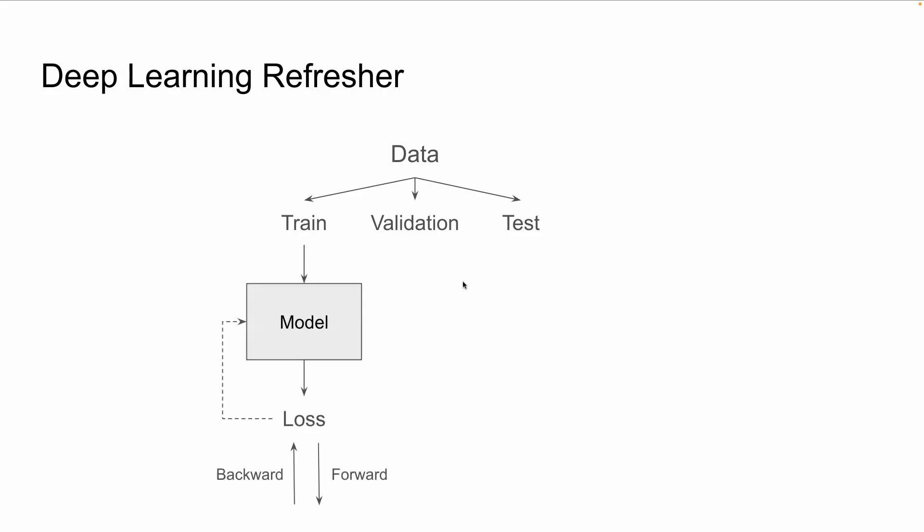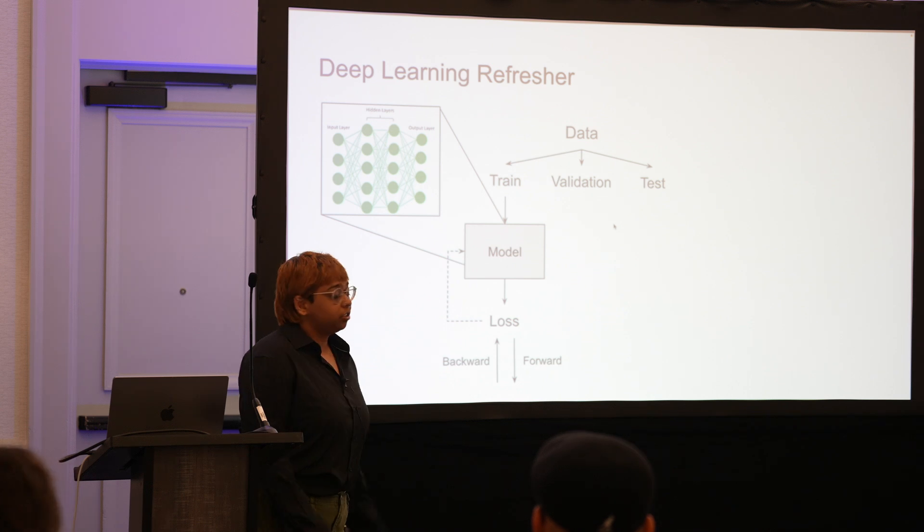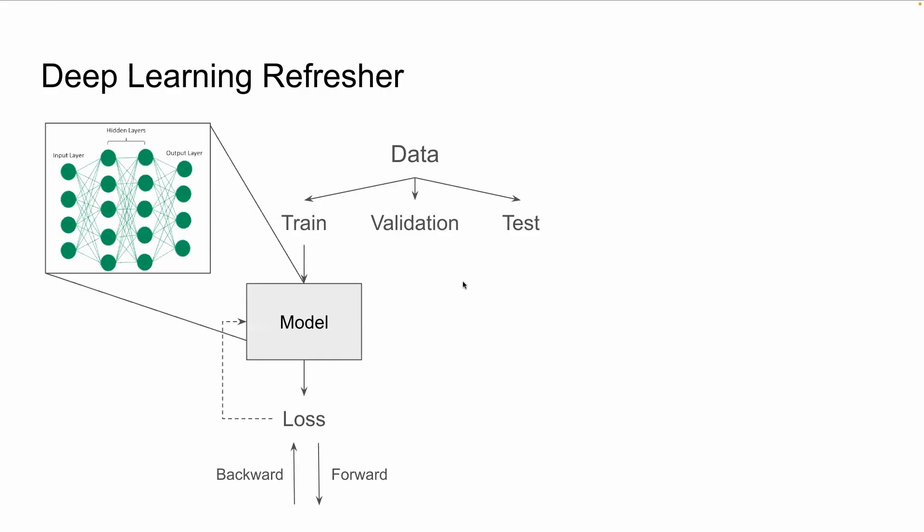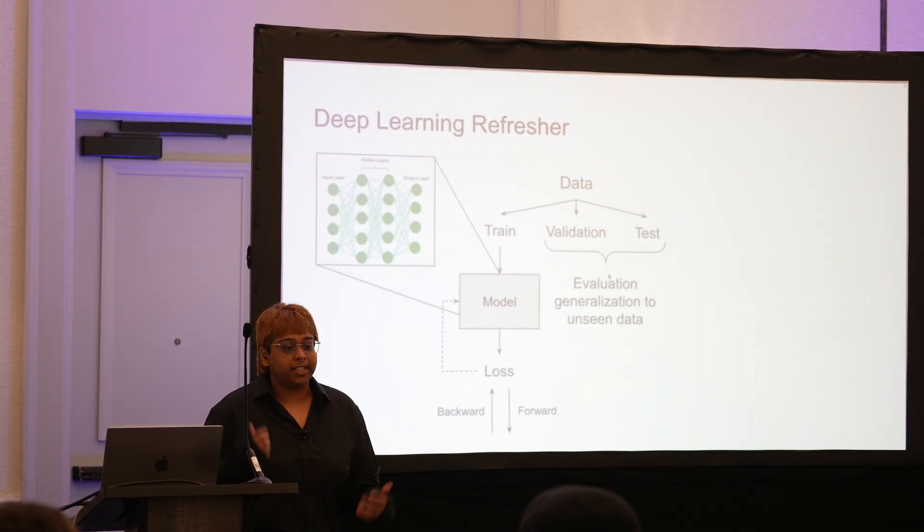With the training data, you're going to train your model. In your model, there will be a loss function. This tells the model how close its prediction is to the actual prediction we want it to make, and we're pushing the loss to be as low as possible. The model usually consists of layers stacked against each other, so the data goes through each layer and gets further non-linearly transformed.